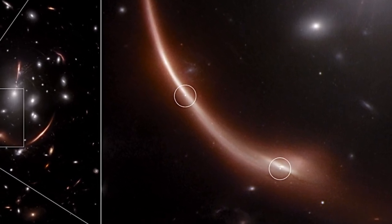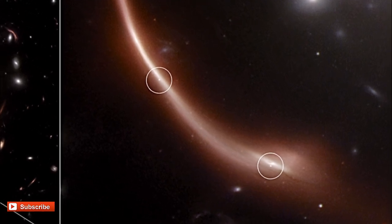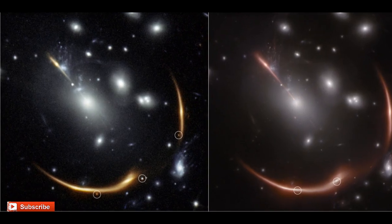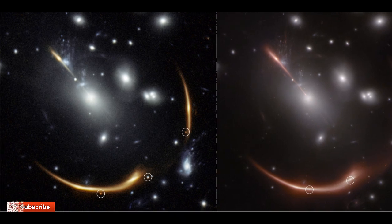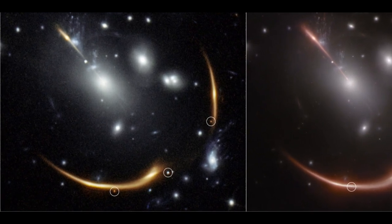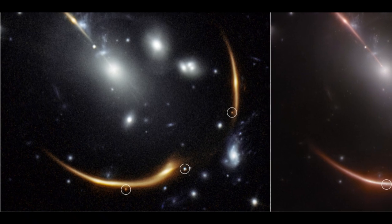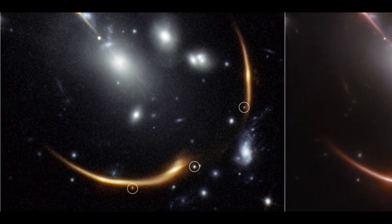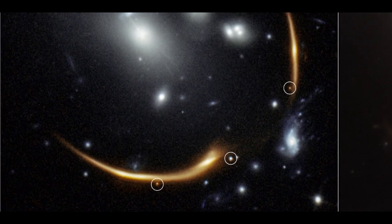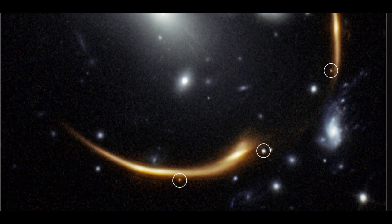This marks a groundbreaking occurrence — the first time that two gravitationally lensed supernovae have been identified within the same galaxy, as explained by Justin Perel, a NASA Einstein Fellow at the Space Telescope Science Institute, and Andrew Newman, a staff astronomer at the observatories of the Carnegie Institution for Science.